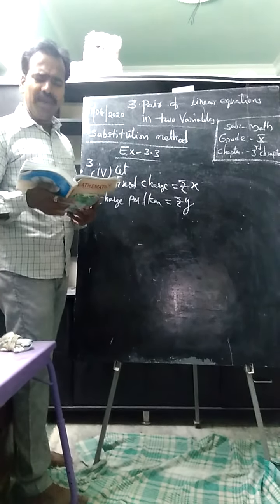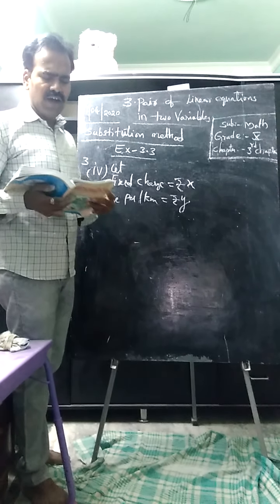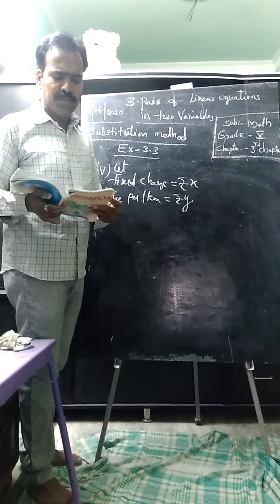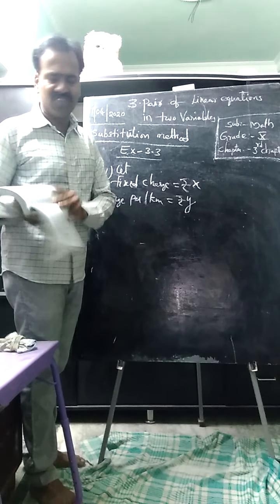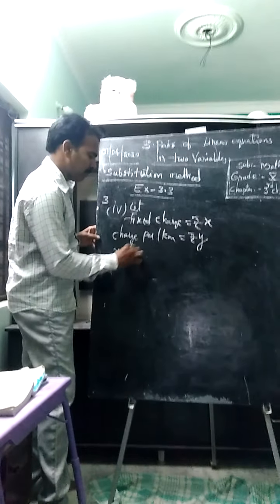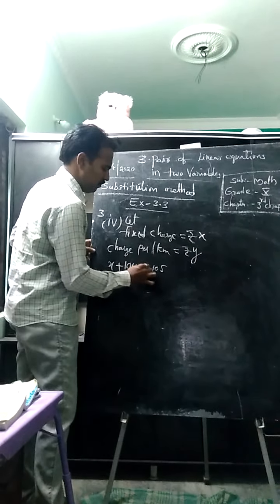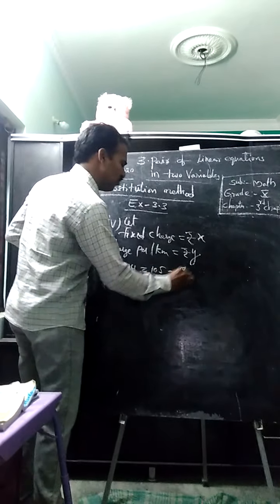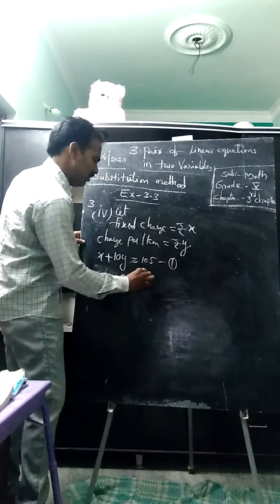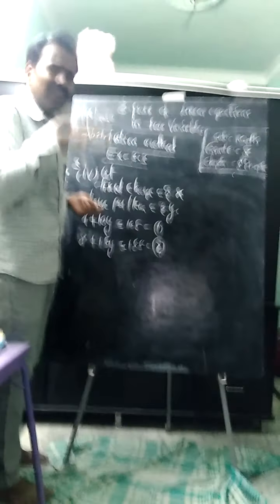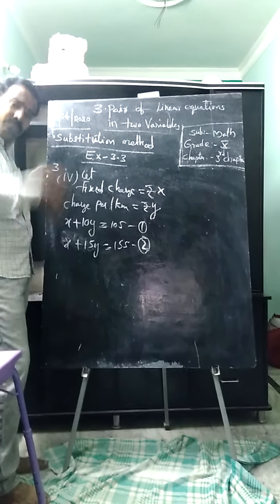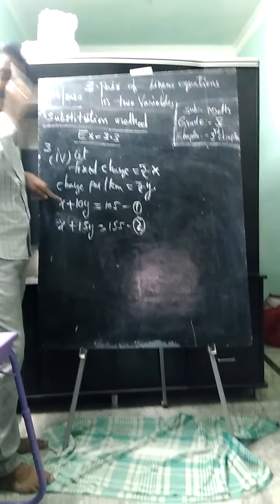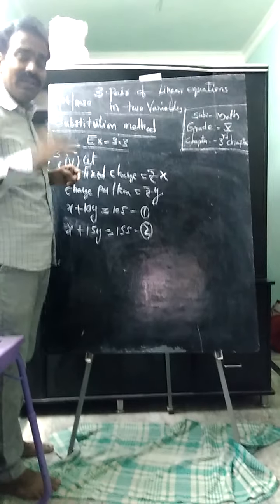We don't know what the fixed charge is. Let fixed charge be rupees x, and charge per kilometer be rupees y. For 10 kilometers: x plus 10y equals 105 — equation 1. For 15 kilometers: x plus 15y equals 155 — equation 2. Note: if the problem mentions a fixed charge for the first 2 or 3 kilometers specifically, the equation changes; but here it says fixed charge together, so we frame it directly.